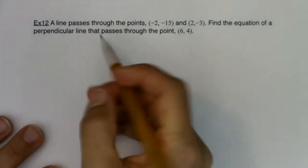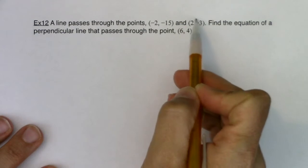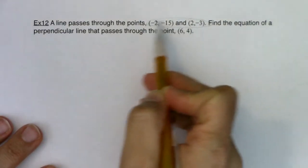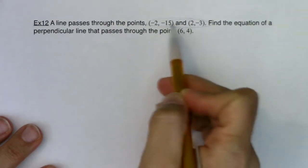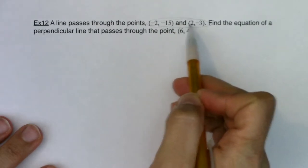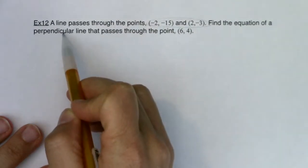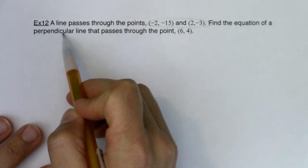So here's my given line. I wasn't actually given the equation of that given line, but I was given two points. So let me find the slope of my given line, and then that will help me determine what the slope of a line perpendicular to that line should be.